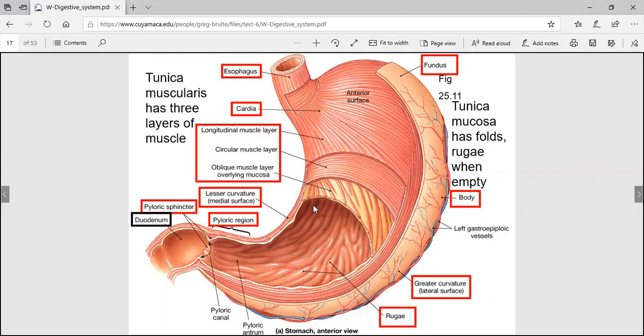It has a tunica adventitia, not a tunica serosa. This would be the esophagus, inside would be stratified squamous for mechanical protection. You get down in the stomach, then it's simple columnar. The stomach has three subdivisions: the inner circular, the outer longitudinal, and even inside the inner circular you have these oblique muscle layers. It just gives the stomach a little more grinding power.